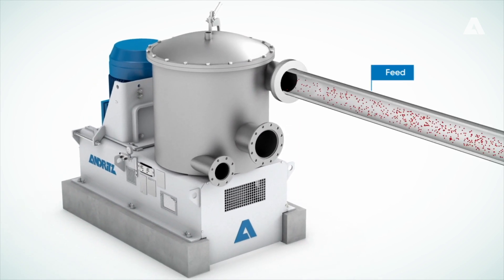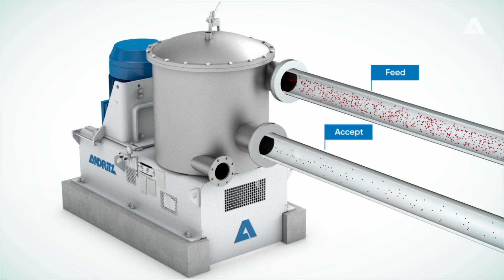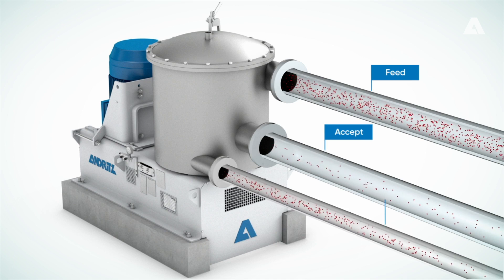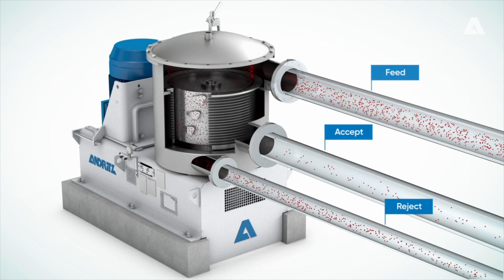Here's how. Feed stock enters the screen under pressure and is then divided into two fractions. The accept fraction passes the screen cylinder for further processing, whereas the reject is removed from the screen to the reject handling.